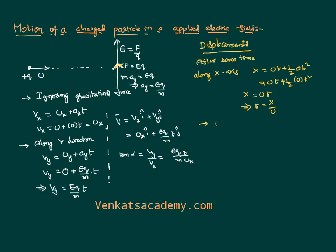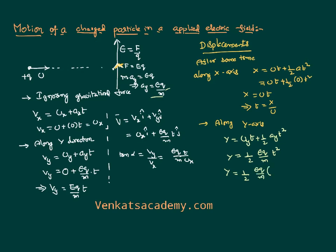Similarly, for the displacement along the y axis, we write y = u y × t + ½ a y × t². Since u y = 0 and a y = eq/m, we get y = ½ (eq/m) t². Eliminating t by substituting t = x/u, we get y = ½ (eq/m) × (x/u)², which simplifies to y = ½ (eq/m) × x²/u².